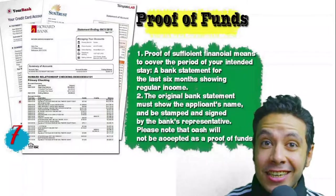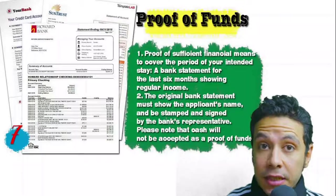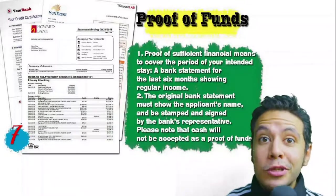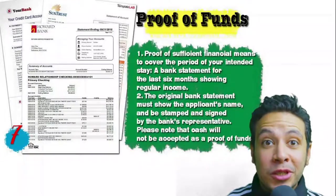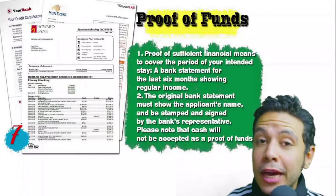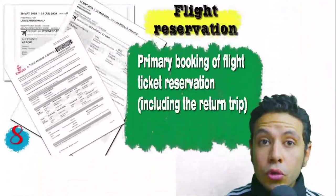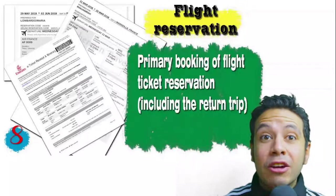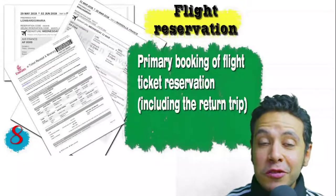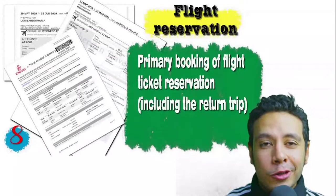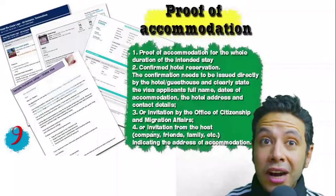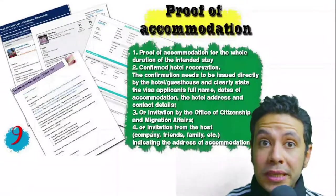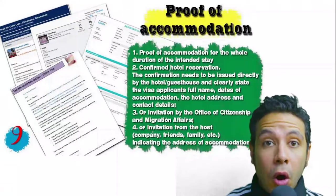You will also need to provide proof of sufficient funds — a bank statement showing your balance for at least six months. The original bank statement must show your name and be signed and stamped by the bank representative. Cash will not be accepted as proof of funds. You should also provide a flight reservation — an initial booking is usually acceptable, though in some cases a confirmed booking is needed — and it must include a return ticket.